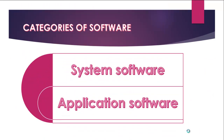Moving to the next objective: the categories of software. We have two categories — system software and application software. System software includes programs that control the basic operations of a computer, such as the operating system, device drivers, and utility programs. System software enables the functionality of the hardware.